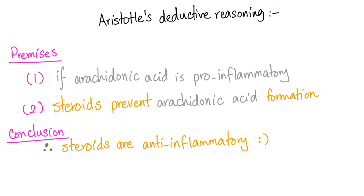By using the Aristotelian method — two premises and a conclusion. One: arachidonic acid is pro-inflammatory. Two: steroids prevent arachidonic acid formation. Therefore, steroids are anti-inflammatory. So logical.